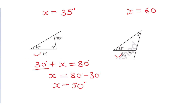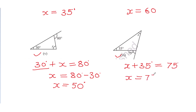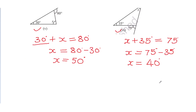Figure number 6: x plus 35 degrees — these are the two interior opposite angles — and 75 is the exterior angle. So x is equal to 75 degrees minus 35 degrees. x will be 40 degrees.